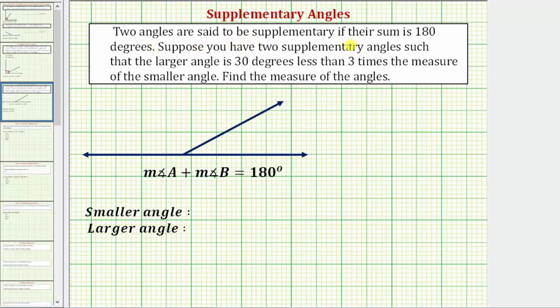Two angles are said to be supplementary if their sum is 180 degrees. Looking at the diagram below, this angle and this angle are supplementary because the sum of their measures equals 180 degrees.